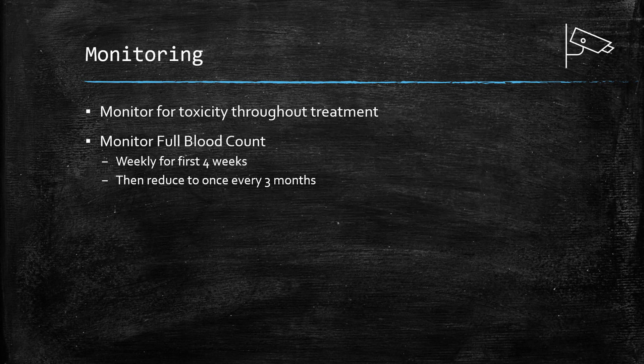In terms of monitoring, you should monitor for toxicity throughout treatment, starting with the advice given to the patient. In terms of actual blood tests, you want to look at the full blood count weekly for the first four weeks, then reduce it to once every three months as a minimum. In practice, you'd often see the full blood count done alongside liver function tests and urea and electrolytes, so you can look at liver function and kidney function in case there's a risk of hepatotoxicity or renal toxicity.